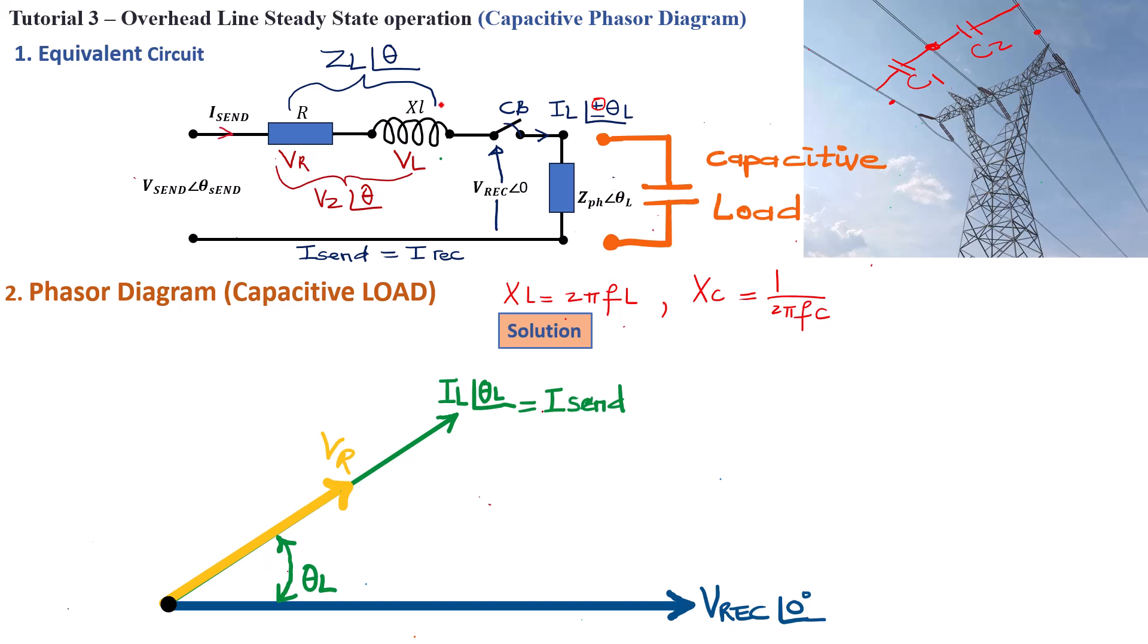And we also know that there will be another voltage that will develop across XL, the inductive reactance of the line, and that voltage is going to lead VR here by an angle of 90 degrees. And the algebraic sum of these two phasors, VL and VR, that's basically what would be our VZ, the voltage drop across the transmission line, VZ.